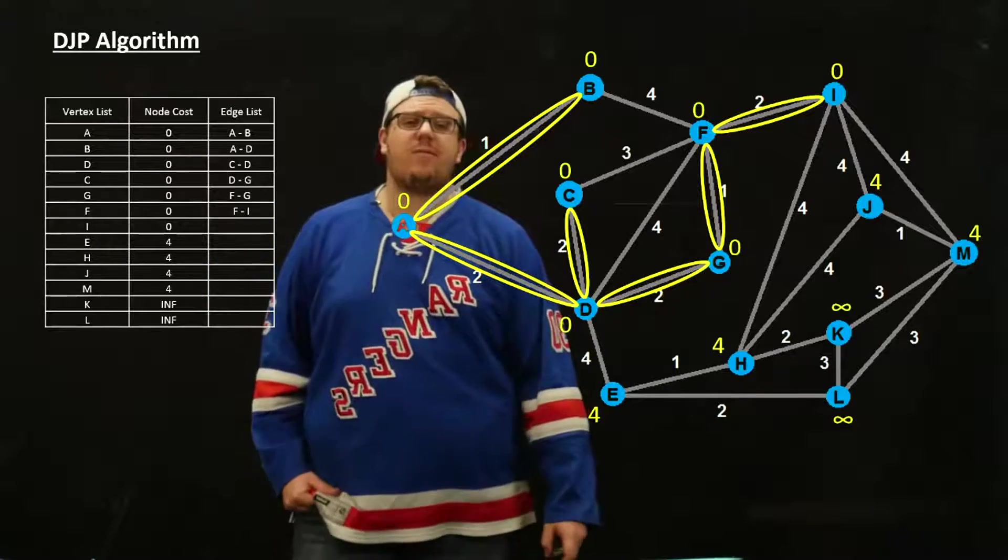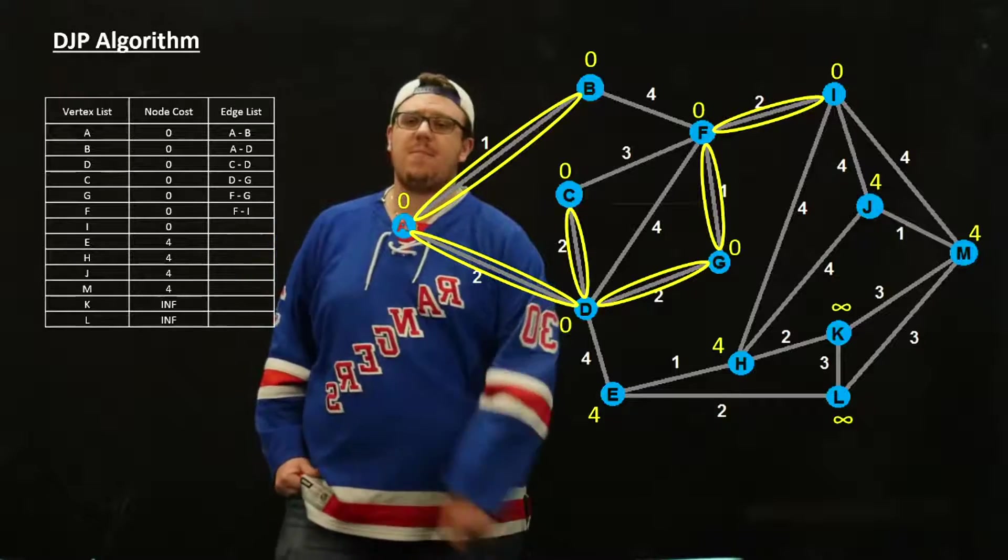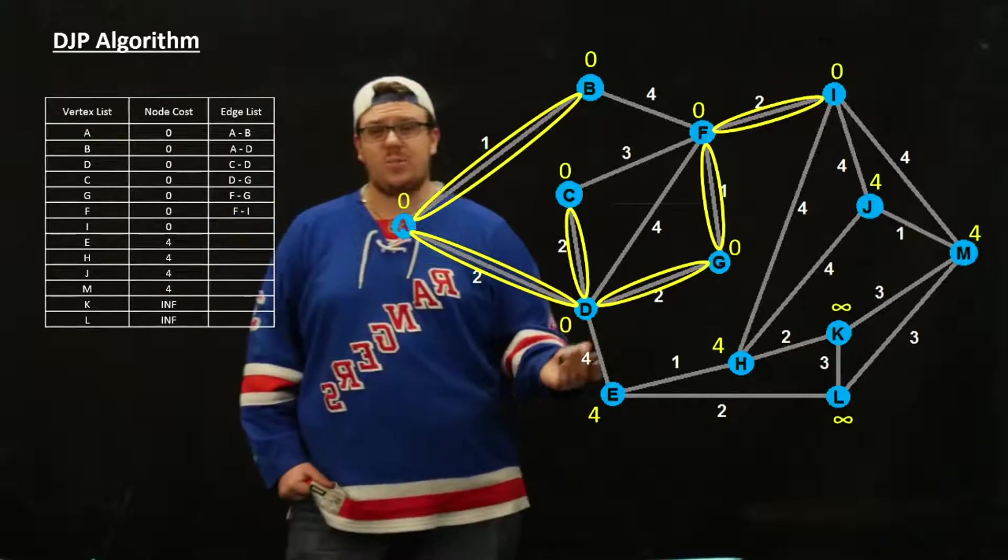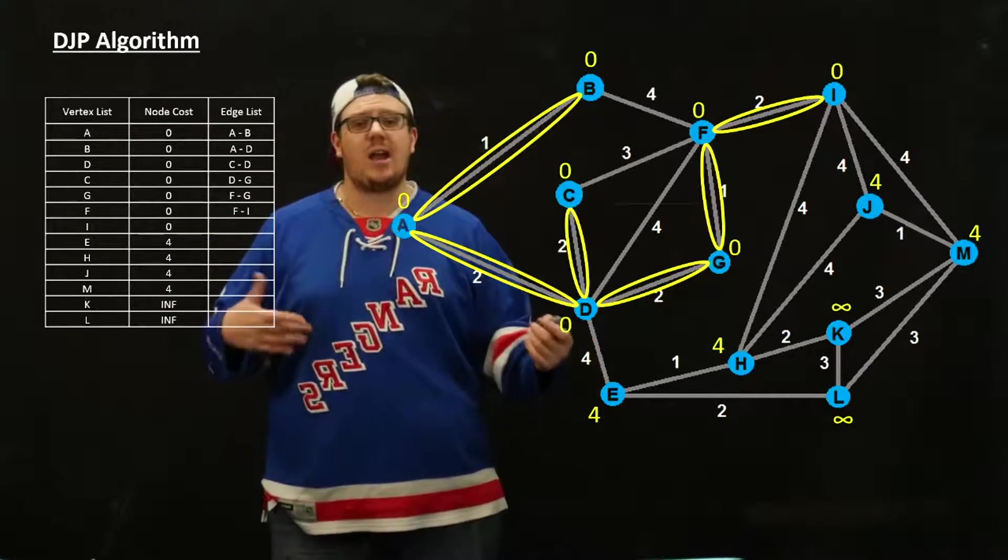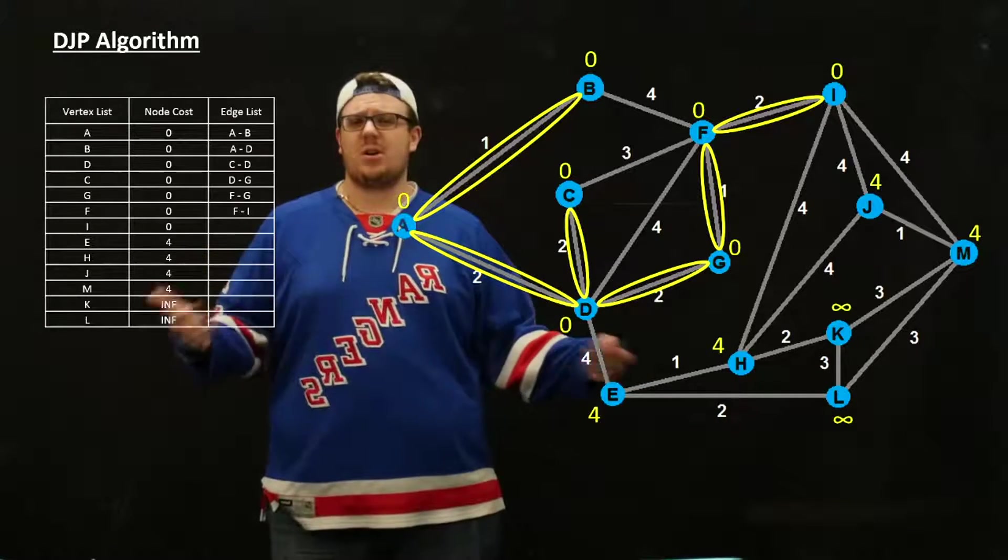So we have four possibilities: E, H, J, and M, and they all have a weight of 4. We have another toss-up situation where we kind of just need to pick one. E comes first alphabetically, so we're just going to pick E.